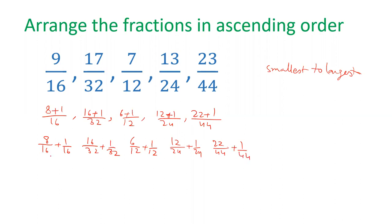We have split the numerator into two parts and written each fraction accordingly. So each fraction becomes half plus a remainder: half plus 1 by 16, half plus 1 by 32, half plus 1 by 12.